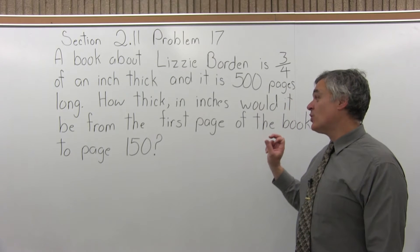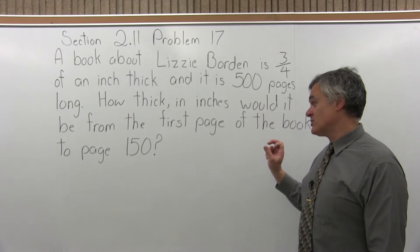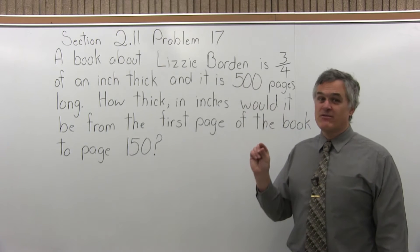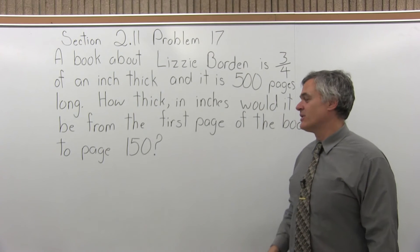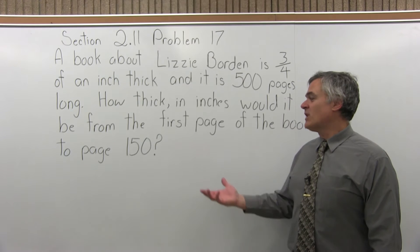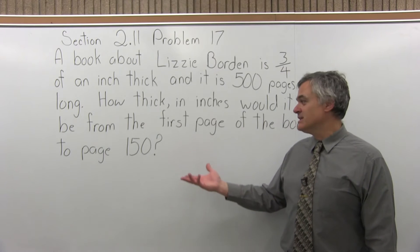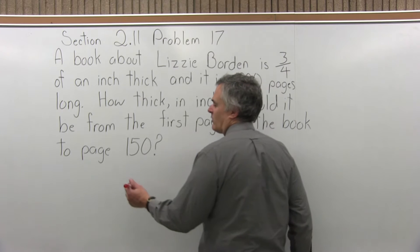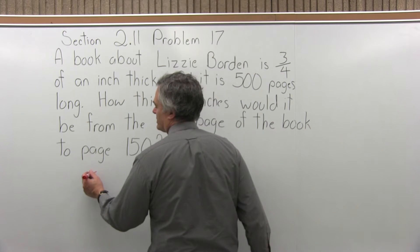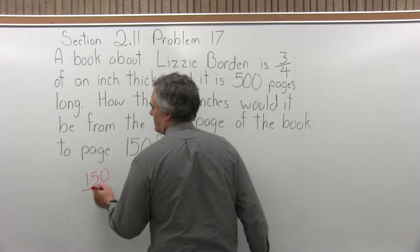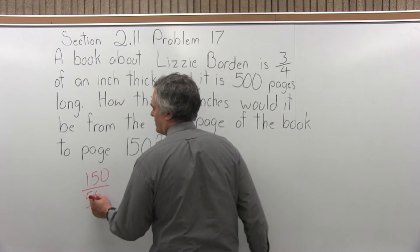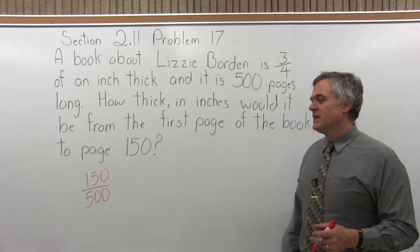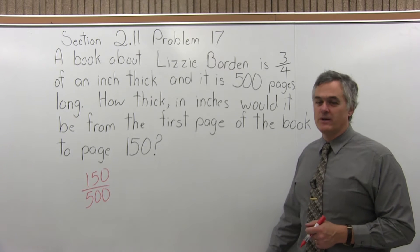The whole book is 3 quarters of an inch, so page 150 is less than halfway through the book, meaning it would be less than half of that three quarters. The portion of the book we've read is 150 over 500 — there are 500 pages altogether and we've read 150 of them. That's the fraction of the book we've read.